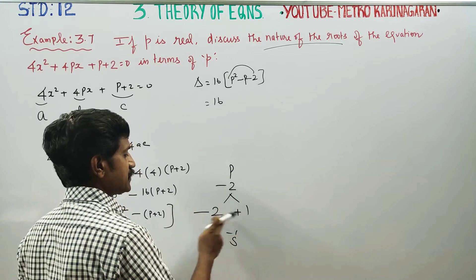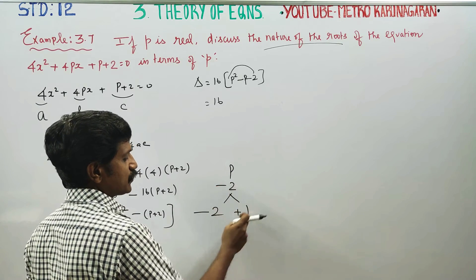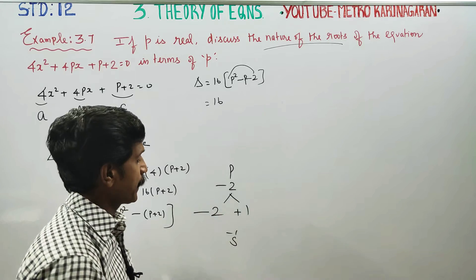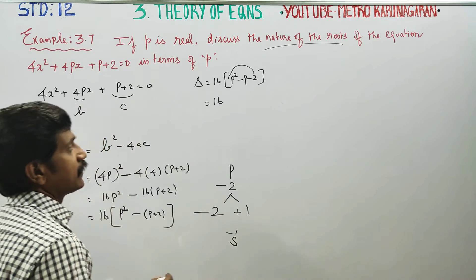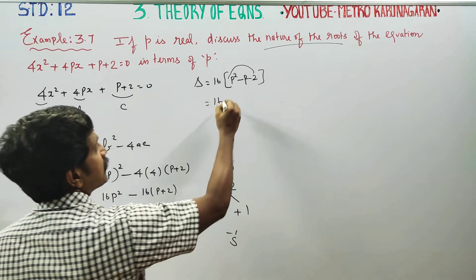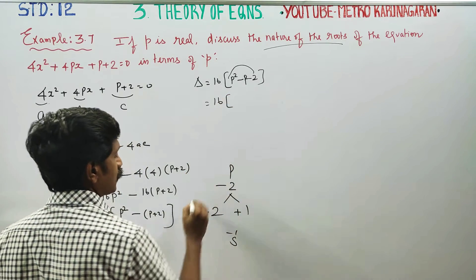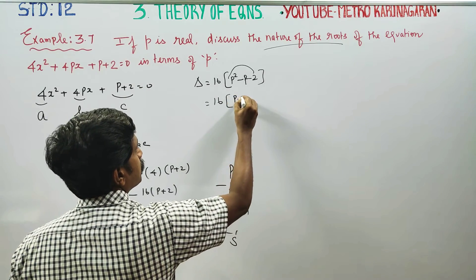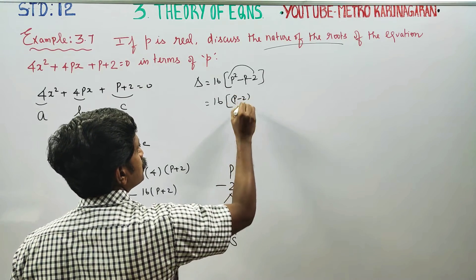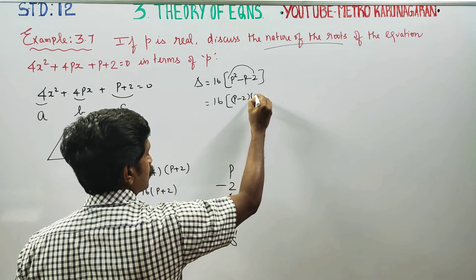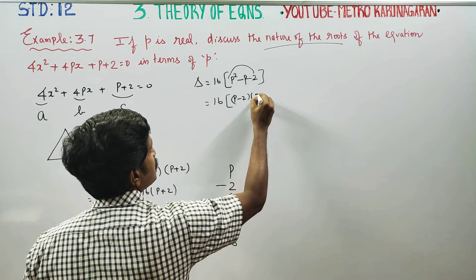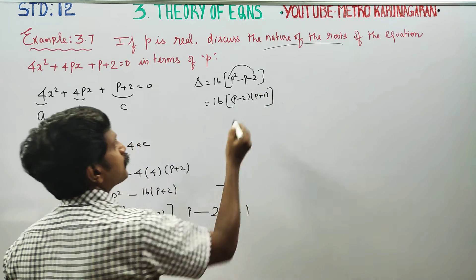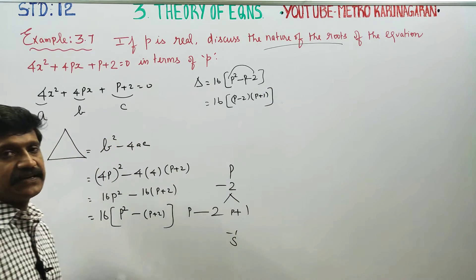Your answer will be 16 into p minus 2 into p plus 1. This is the delta value.